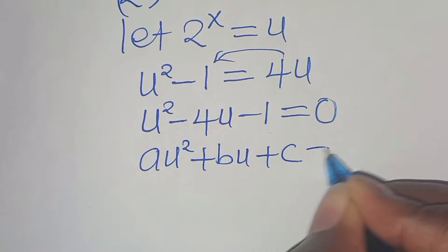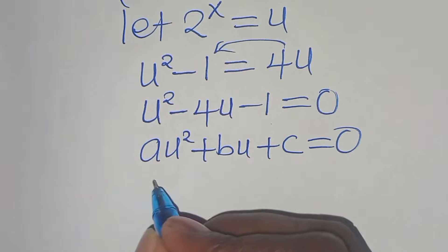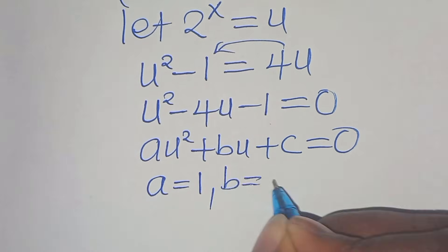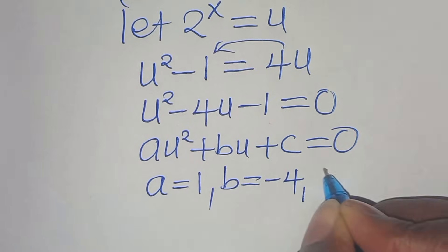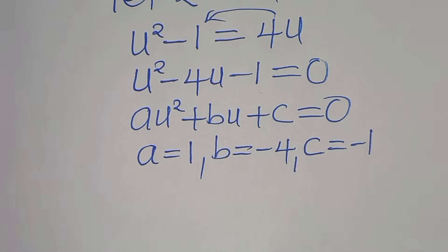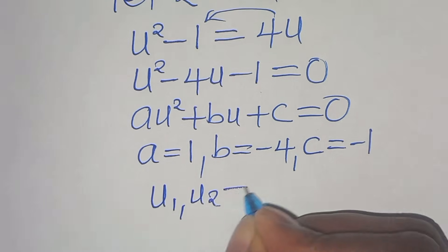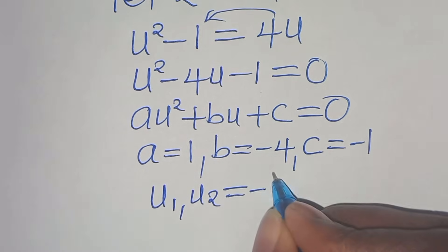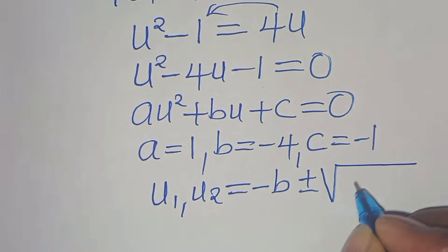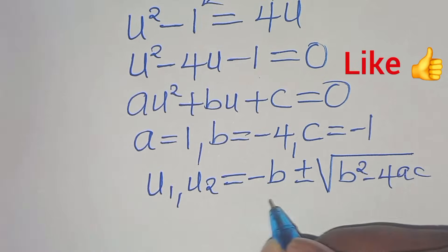This is a quadratic equation of the form au² + bu + c = 0. From our equation, a equals 1, b equals minus 4, and c equals minus 1. We can solve for u using the quadratic formula.